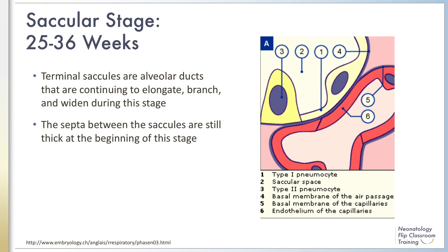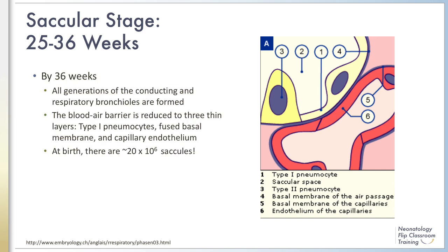At the beginning of this stage, the septa between the saccules are still thick with a two-layer capillary network from neighboring saccules. By 36 weeks, all generations of the conducting and respiratory bronchioles are formed. The blood-air barrier begins to narrow to three thin layers made up of type 1 pneumocytes, the fused basal membranes of the epithelial cell and capillaries, and the capillary endothelium. At birth, the primitive alveoli are still primary saccules, and there are about 20 times 10 to the 6 saccules at term gestation.